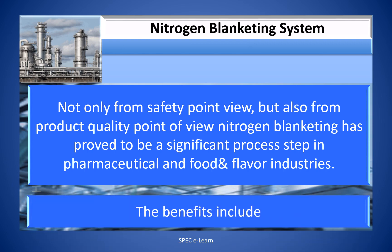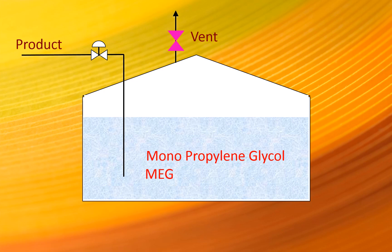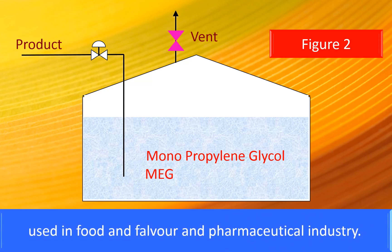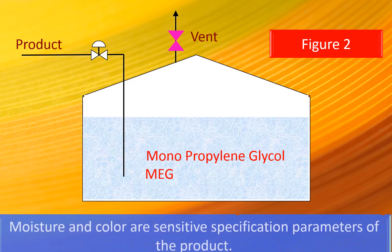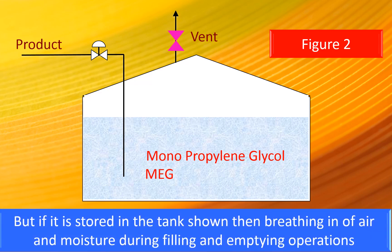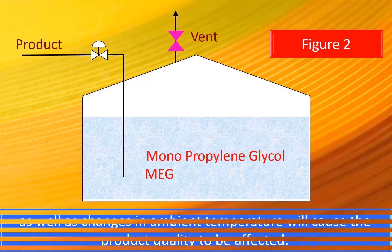The benefits include keeping product moisture under control, preventing contamination and degradation, and preserving the product. Shown in the figure is a stainless steel storage tank used for storing monopropylene glycol, a petrochemical product used in food, flavor, and pharmaceutical industries. Moisture and color are sensitivity specification parameters of the product; breathing in of air and moisture during filling and emptying operations as well as changes in ambient temperature will cause the product quality to be affected.